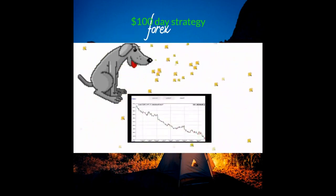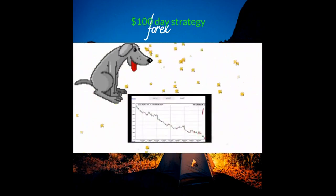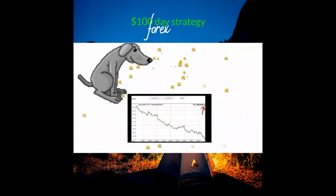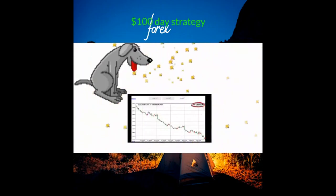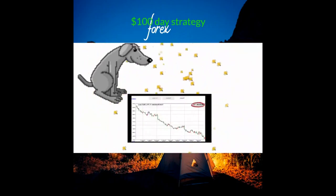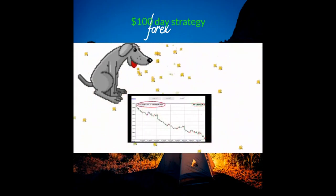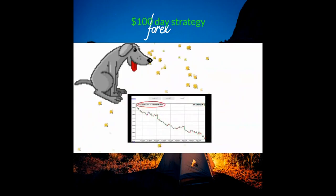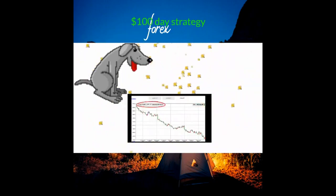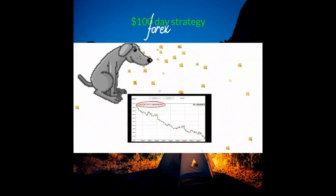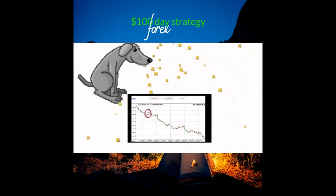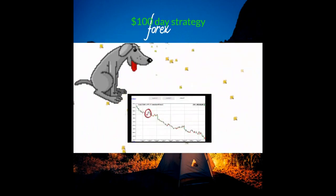We can see the trend direction, the pair and timeframe, and the trend drawdown. The drawdown is very low and the trend looks very nice. This blue line is the maximum drawdown — this is how the best trend is determined.